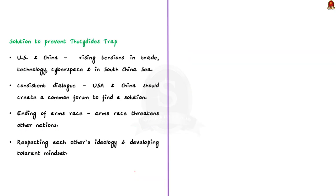The USA and China are currently facing rising tensions in trade, technology, cyberspace and even in the South China Sea area. If you look at history, the relationship between a rising power and a hegemonic power often ends up with severe conflict — that is, war. There are some possible ways which can prevent both countries from falling under this trap.